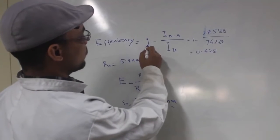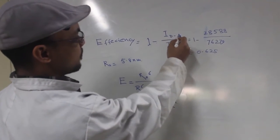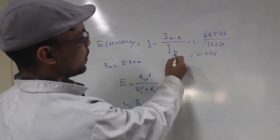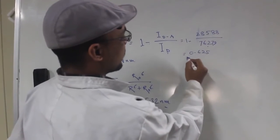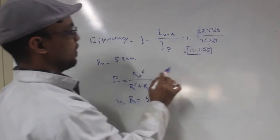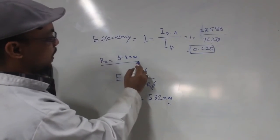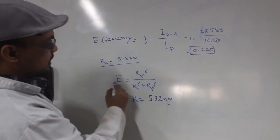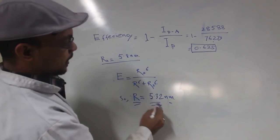FRET efficiency is equal to 1 minus intensity of donor in presence of acceptor divided by intensity of only donor. From our experiment, these are our intensity values and we get the FRET efficiency 0.625. R0 for this particular FRET pair is 5.8 nanometers. So from the efficiency and the R0 value, the distance R is equal to 5.32 nanometers.